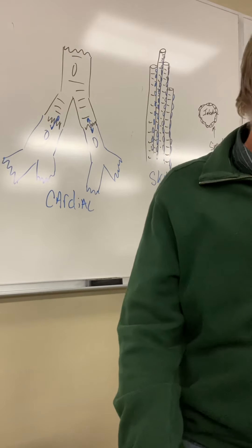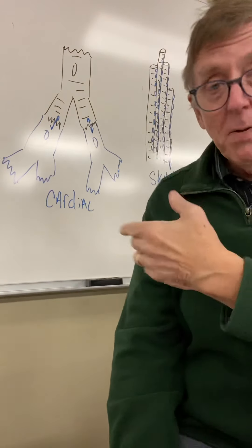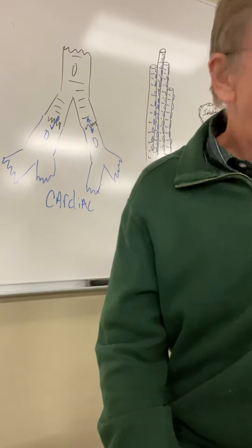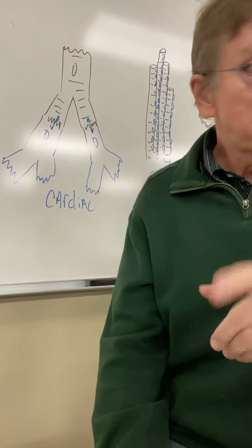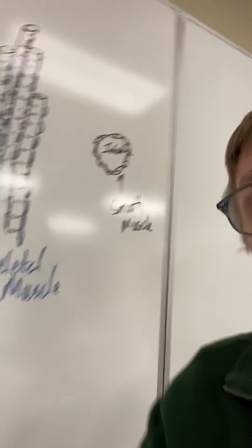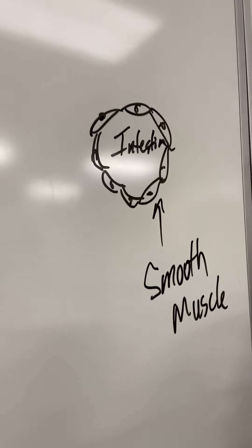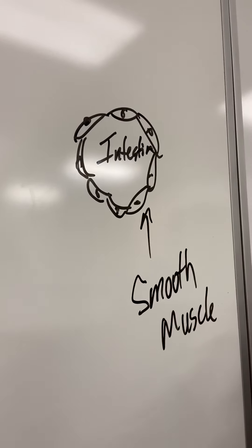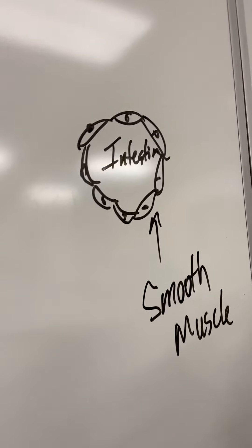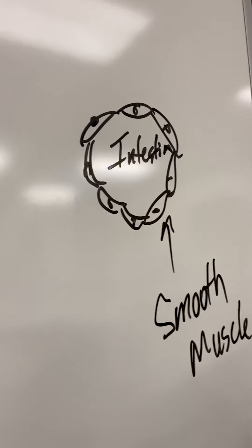Cardiac cells are involuntary — they're capable of beating your heart rhythmically throughout life. The third example is smooth muscle. I'll pick up my phone so you can see it better. Smooth muscle cells are spindle-shaped. We have maybe eight or ten of them shown here, with 'intestine' labeled in the middle.